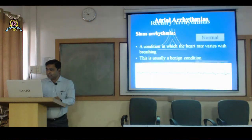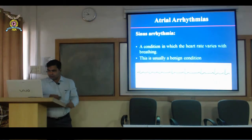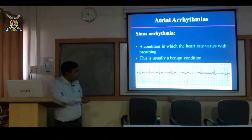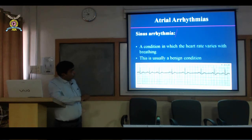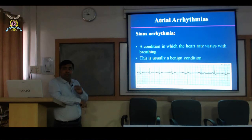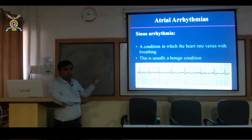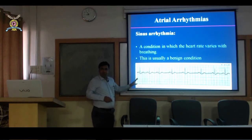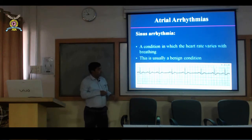Looking at the ECG, you may see three beats then a sudden bradycardia — this could be labeled as atrial arrhythmia by someone, but this is an example of sinus arrhythmia. In atrial arrhythmia, the impulse arises somewhere in the atrium other than the SA node. So if you see that the P wave morphology looks different from the normal P wave, that means it is not coming from the normal side — it is an ectopic atrial rhythm.